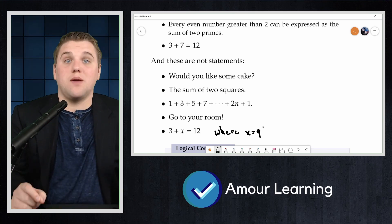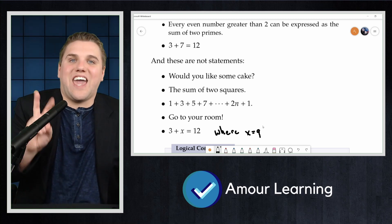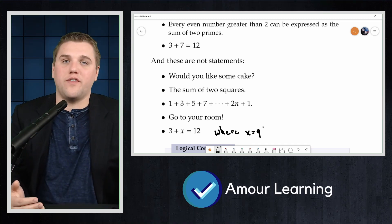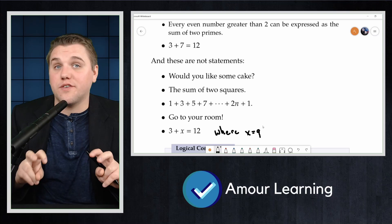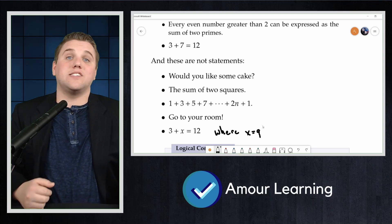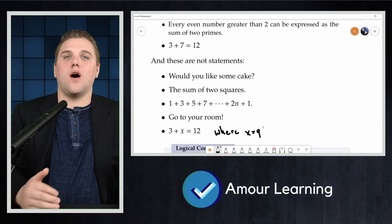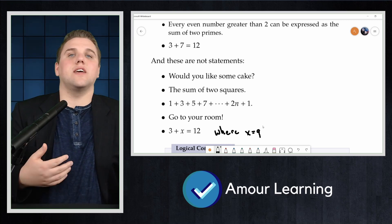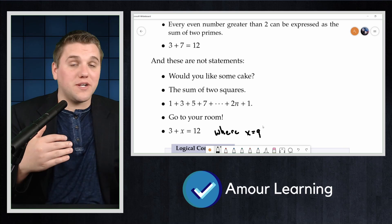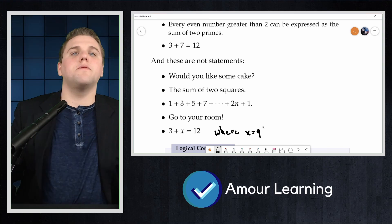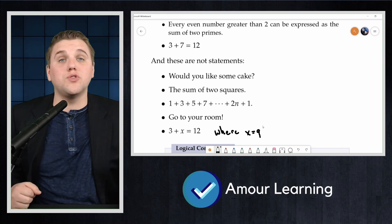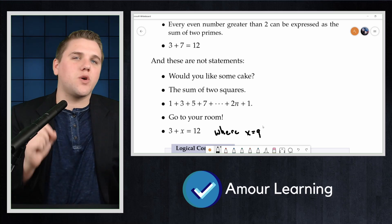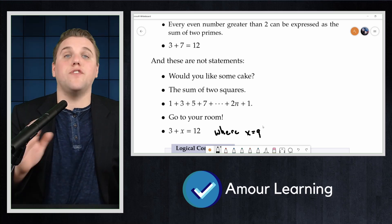3 plus x equals 12, which is a true statement. Or you could capture the free variable by quantifying over it. As in 3 plus x equals 12 for all values of x, which is false. Or in the example, 3 plus x equals 12 for some value of x, which is a true statement. We will discuss quantifiers in more detail in future videos.